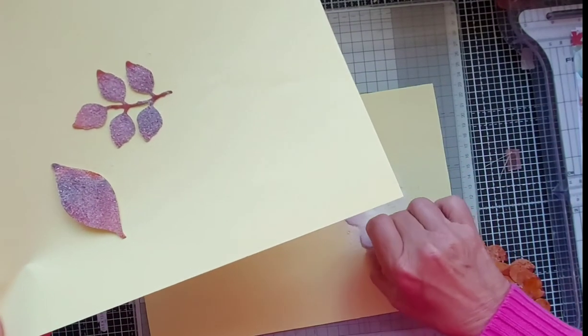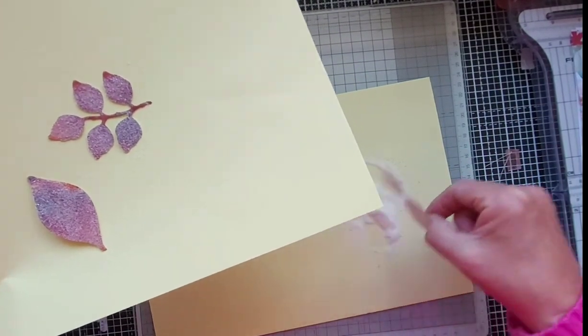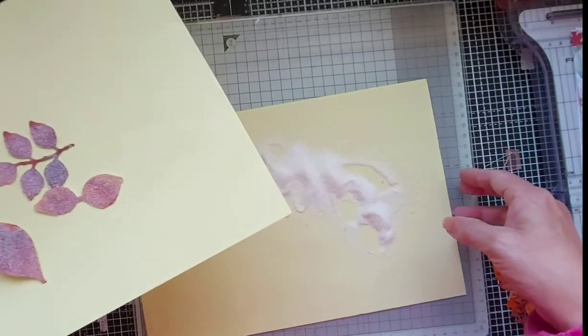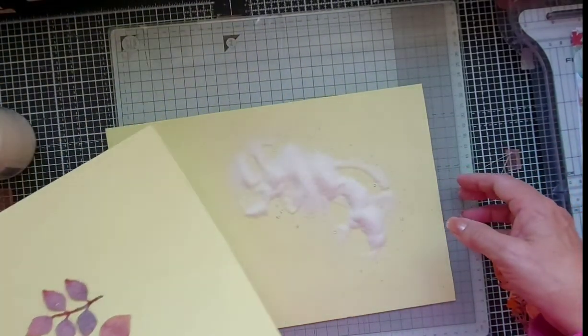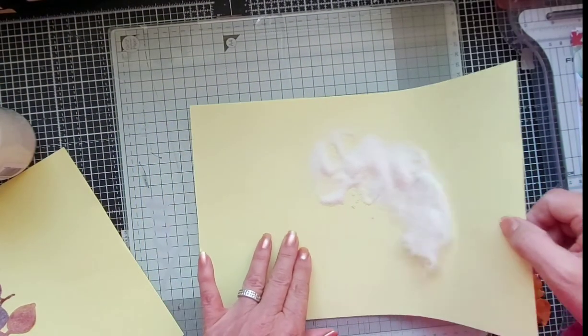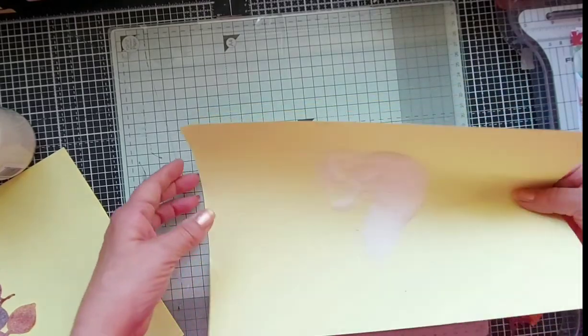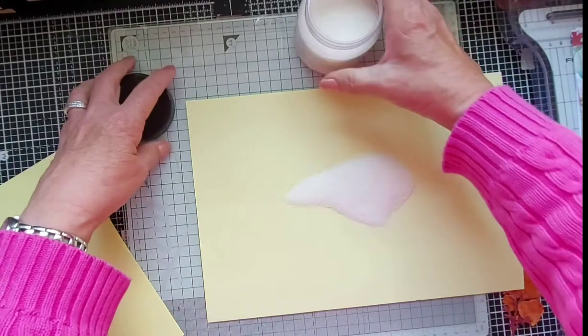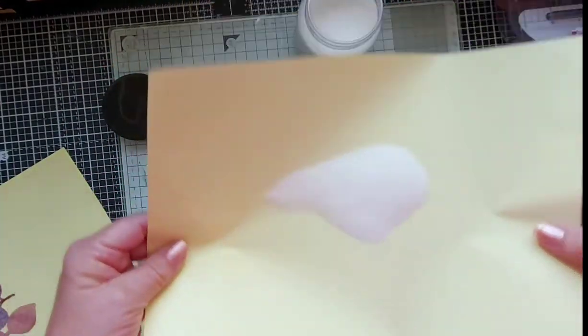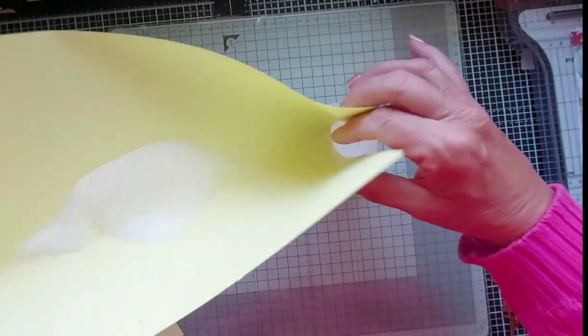I should have had my tweezers but never mind. Getting the enamel all over my fingers. Right, I'll move this out of the way because I don't want my heat gun... In fact I'll put it back in the jar so I won't have it blowing all over my craft room.